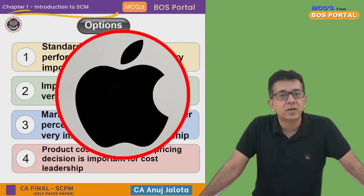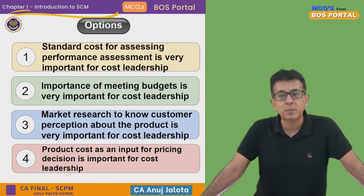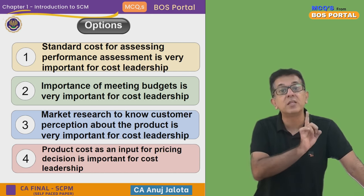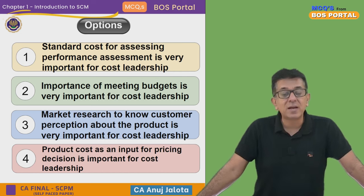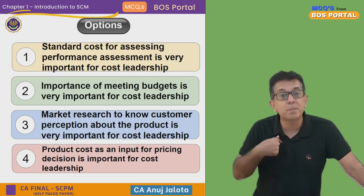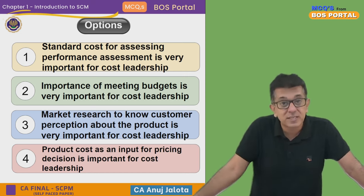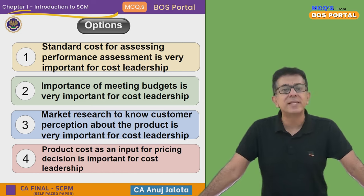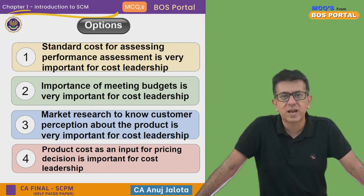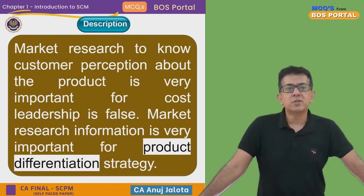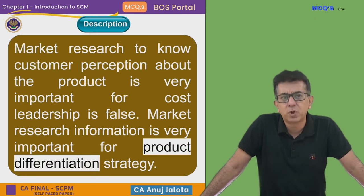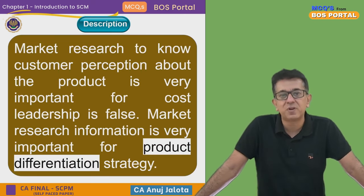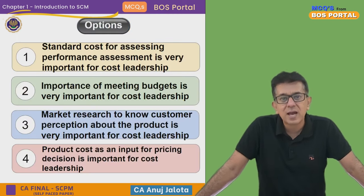The products or service or brand could be superior — something like Apple. At that time, market research is very important because you need to assure yourself that your product is being perceived by consumers as very different from the competition. You inquire from customers: do they think your product is better than all other competitors' products? If yes, only then product differentiation works. So market research is not much required for cost leadership — it is required for product differentiation. That is what the ICAI has tried to explain: market research to know customer perception is very important for product differentiation strategy, not cost leadership. So option three is false.